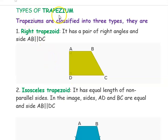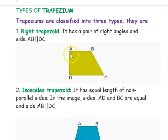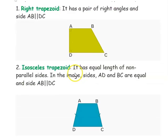Next we will see about types of trapezium. Trapeziums are classified into three types. The first is the right trapezoid, which has a pair of right angles. Here side AB is parallel to side DC and it has two right angles at A and D, so it is called a right trapezoid.